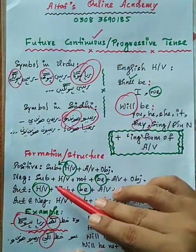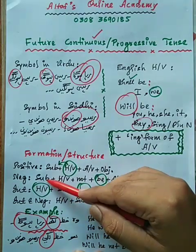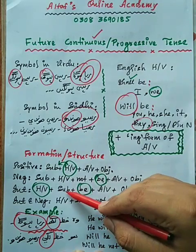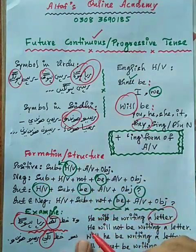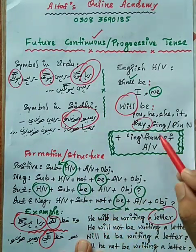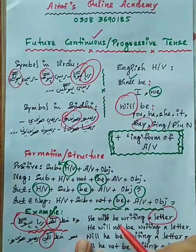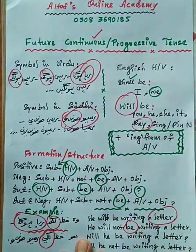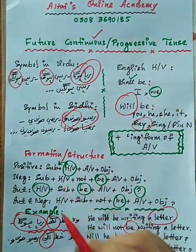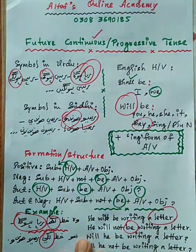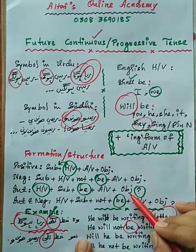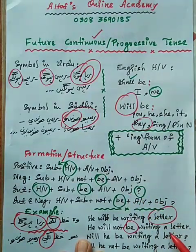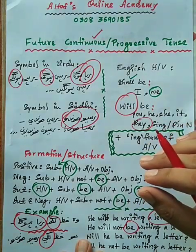For the negative form: subject is 'he', then helping verb — with 'he' we use 'will'. Then 'not', then 'be', then action verb in -ing form 'writing', then object 'a letter', full stop. Sentence: He will not be writing a letter. For interrogative: helping verb 'will' first, then subject 'he', then 'be', then 'writing', then object 'a letter', question mark. For interrogative-negative: will, he, not, be, writing, a letter, question mark.